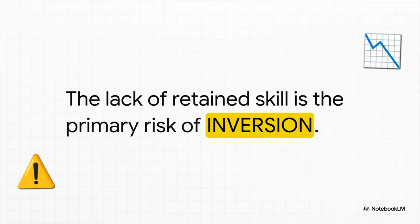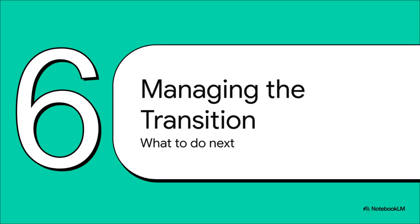And that hidden catch — the fact that nobody actually retained any new knowledge? That is the risk of inversion. Over-relying on the tool undermined the chance for real, deep learning. This shows us that all of these effects — augmentation, substitution, and yes, even inversion — can all be happening at the very same time. Understanding this framework is absolutely the key to managing this massive transition to an AI-augmented future.